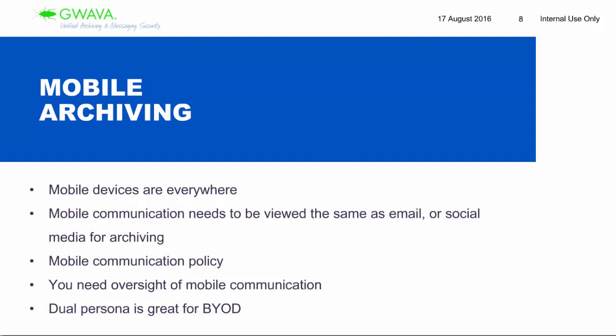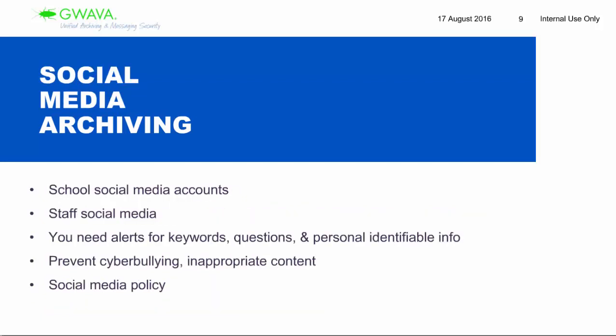Let's flip to social media. A lot of people ask whether they should allow their students or faculty and staff to access social media on the school network, what to do about the school's official social media accounts, and whether you can actually archive and monitor something as personal as a student's social media. The key here is again a policy. You need a social media policy — or even a broader communication policy that covers email, social media, and mobile, outlining what's appropriate and what isn't. The biggest thing is to start with that policy.